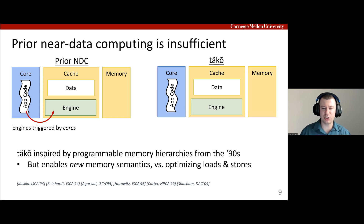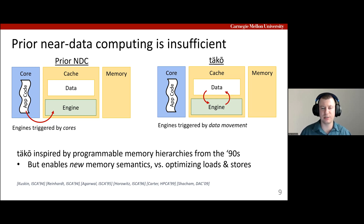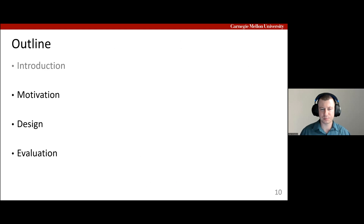In TACO, caches trigger software, not cores. Intercepting cache misses and evictions is the critical mechanism that lets software observe and control data movement, which is missing from prior systems. That wraps up our intro to TACO. Now we will go over a quick motivating example, then describe TACO's design and present a few more results.